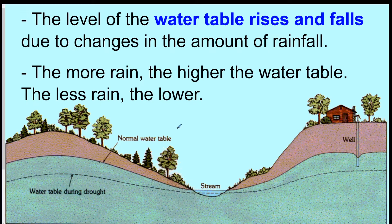The level of the water table rises and falls due to the amount of rain, melt, and similar factors. A normal water table height can drop significantly during a drought — notice that if it drops, a well over here won't be able to pump up water. Many places rely on heavy rain to keep that water level up, or they would have to extend the length of the well.